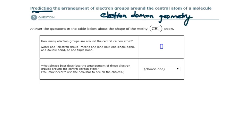We're going to predict the arrangement of electron groups around the central atom. So what is this molecule or polyatomic ion that we are looking at? Here it is — a methyl anion. It's going to start with us drawing the Lewis structure.